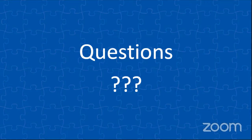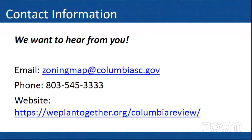We'll give it just a few minutes here. Our contact information again: email zoningmap@columbiasc.gov, or call us at 803-545-3333. You can also find a great deal of information at weplantogether.org/columbia-review — that's the direct page for our part of that site, and it has the full text of the ordinance as adopted as well as the draft map viewer. It also gives you the opportunity to sign up for our one-on-one meetings or submit a comment to staff.